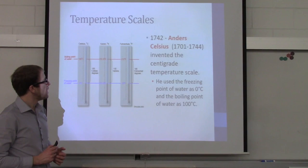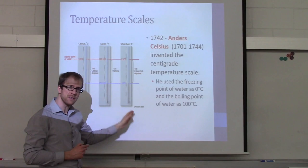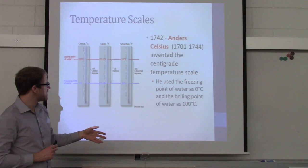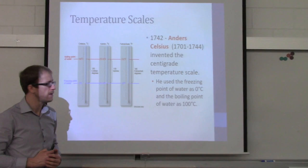Now these scales can be related to one another. Here we have the Celsius scale, the Kelvin scale, and the Fahrenheit scale. At zero degrees Celsius, that is equal to 273.15 Kelvin and 32 degrees Fahrenheit. 100 degrees Celsius is 373.15 Kelvin and 212 degrees Fahrenheit.